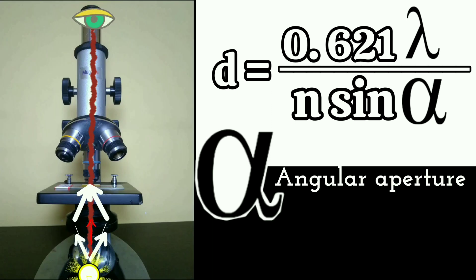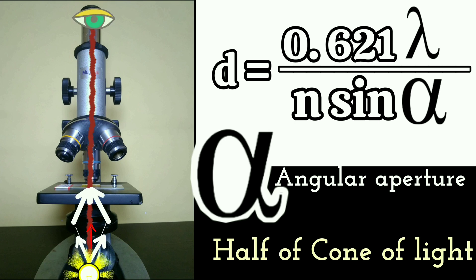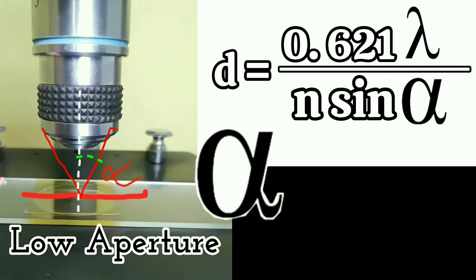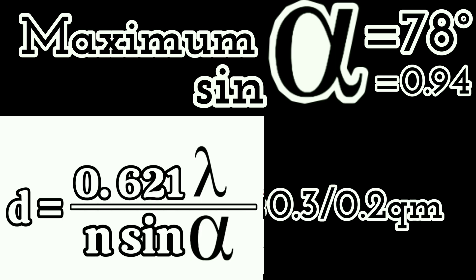The angular aperture is half of the cone of light entering the objective lens. To increase alpha, the objective lens is moved closer to the specimen. The angular aperture for the best objective lenses is about 78 degrees, and the maximum value of sine alpha is about 0.94. For a lens designed for use in air or oil, by using the appropriate refractive index, resolution can be enhanced to 0.3 or 0.2 micrometers respectively.